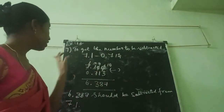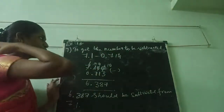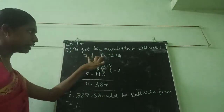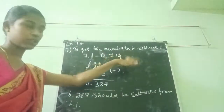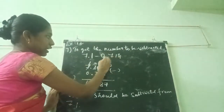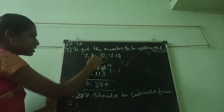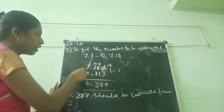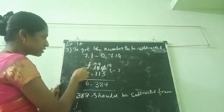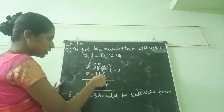Now I am writing: to find the number to be subtracted, we want to do 7.1 minus 0.713. In the right hand side they have given 3 decimal places; here there is only 1. That means I am putting 2 extra zeros: 7.100. Now I am minusing: 7.100 minus 0.713.